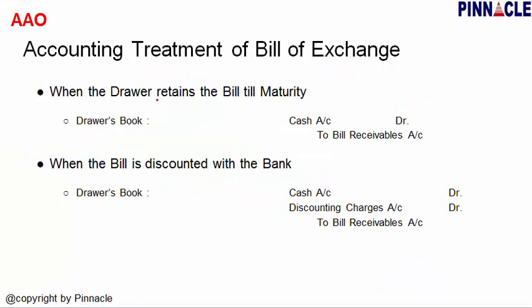If the drawer retains the bill till maturity, the entry is: Cash Account debited, and Bill Receivable Account credited — the bill receivable is cancelled as it was already an asset, and now payment has been received.